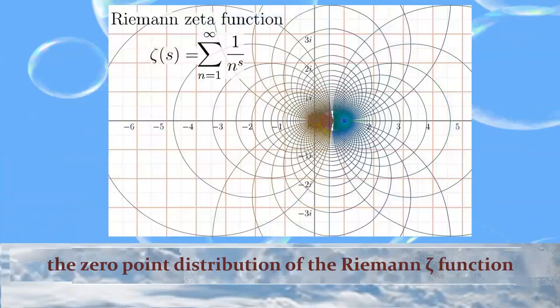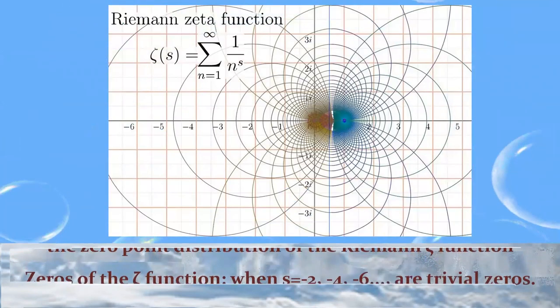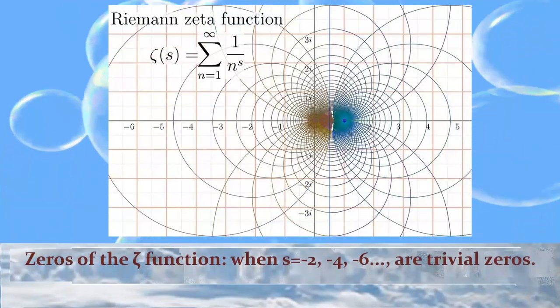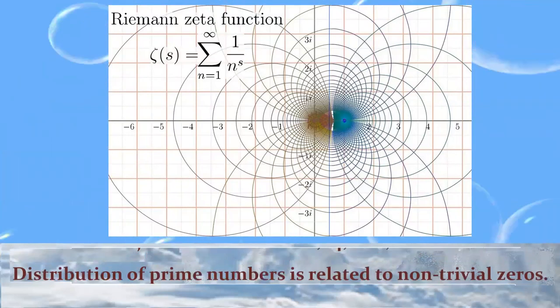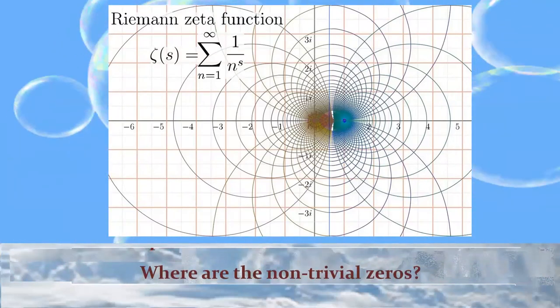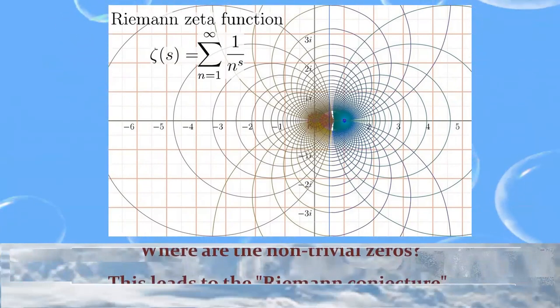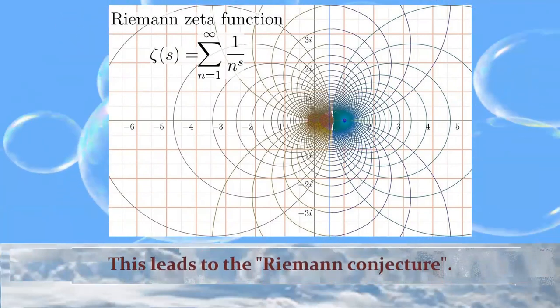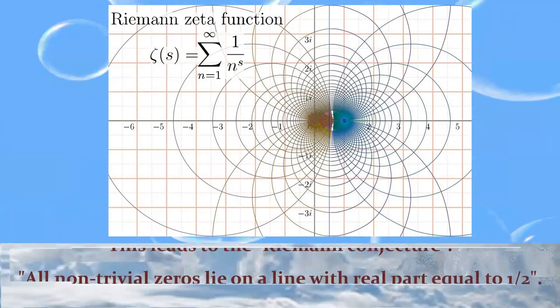Zeros of the zeta function at s equals negative 2, negative 4, are trivial zeros. The distribution of prime numbers is related to non-trivial zeros. Where are the non-trivial zeros? This leads to the Riemann conjecture: all non-trivial zeros lie on a vertical line with real part equal to one-half.